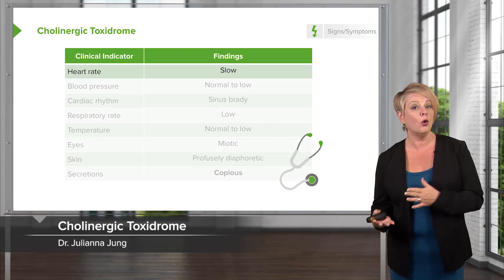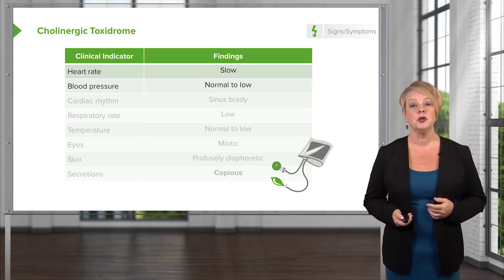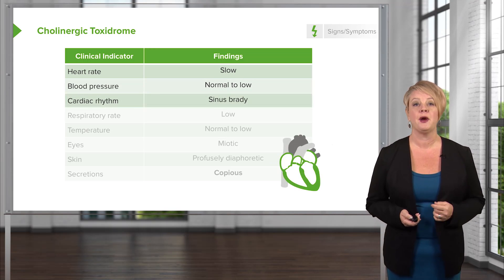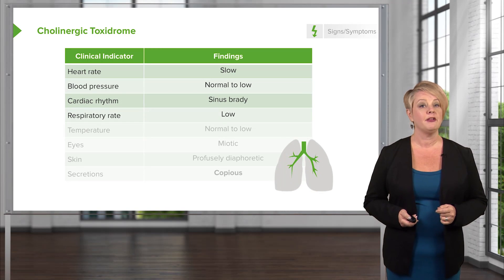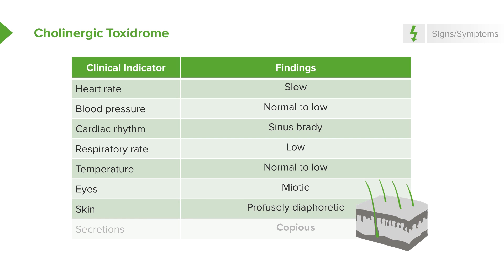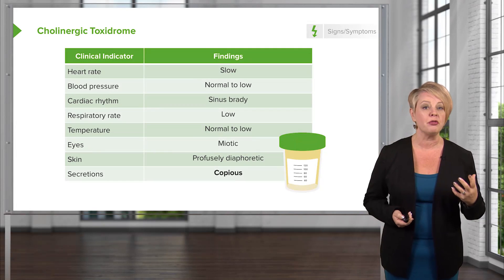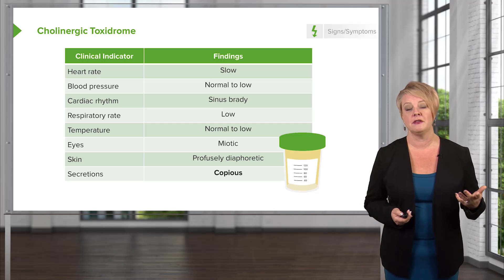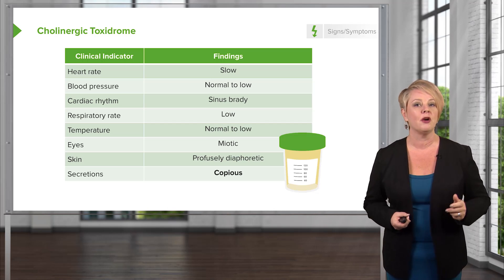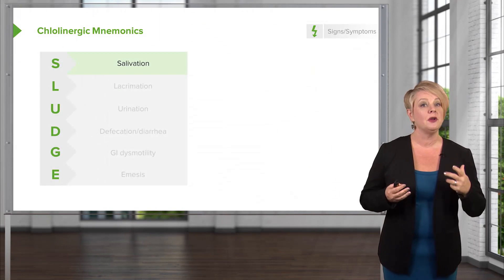The cholinergic toxidrome is the opposite of anticholinergic. These patients have a slow heart rate, normal to low blood pressure, sinus bradycardia, and arrhythmias are very unusual. They have some respiratory depression and typically a normal to low temperature. Pupils are miotic — constricted and small. A really important differentiating feature: these patients will be wet. Their skin will be profusely diaphoretic and secretions will be copious — lots of secretions in the mouth, lots of tearing — because that's what the parasympathetic nervous system does.